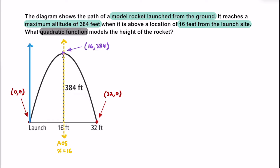To help visualize this on a coordinate plane, the y-axis — or f(x) — is going to represent the height of this model rocket, and the x-axis represents the distance from the launch site. Now, while there are a few different forms of quadratic functions we could write, let's go ahead and write the vertex form for quadratics.